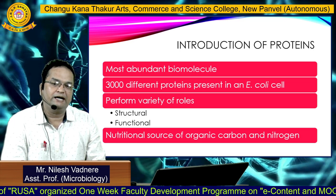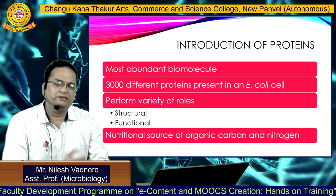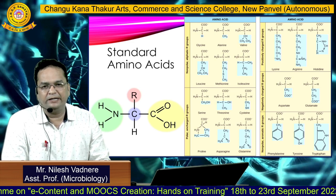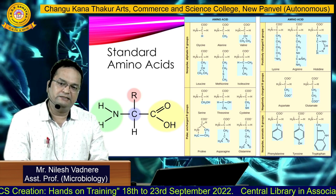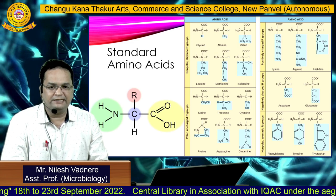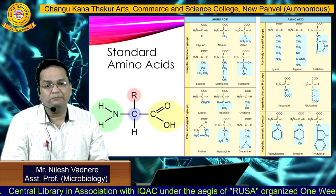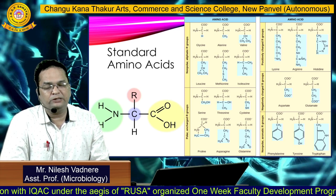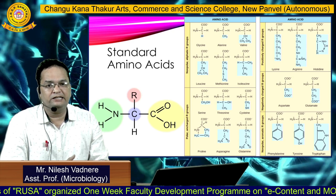Proteins are also considered a good source of organic carbon and nitrogen, and therefore many products are available in the market as protein supplements. Proteins are basically made up of amino acids. Amino acids have a common structural formula that contains an alpha carbon atom linked with a carboxylic acid group and an amino group. Besides that, the alpha carbon atom is also linked to a hydrogen atom and an R-side chain. There are more than 100 naturally occurring amino acids, of which only 20 are used for protein synthesis. These 20 are called standard amino acids.